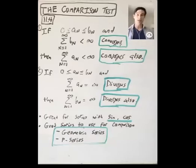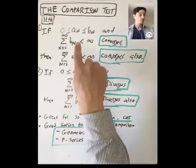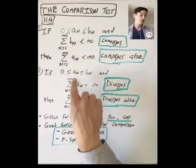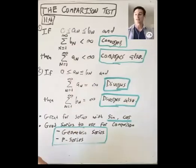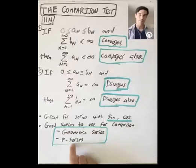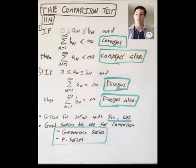This works really well for series where the sequence you're adding up has a sine or a cosine in it — we'll see an example of that in a few minutes. You have some series you want to know about, either the a_n sum or the b_n sum, and you need some related series to compare it to. The two classes of series that we understand really well are geometric series and p-series — we know exactly when they converge and diverge, so they'll be really useful in applying the comparison test.